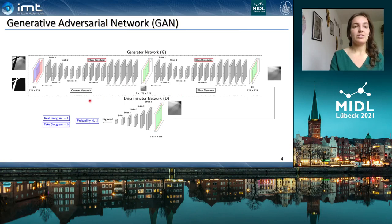The coarse network makes the first initial coarse prediction, which is then used as input to the fine network. The fine network thus has a more complete scene of the image and can make an enhanced prediction.